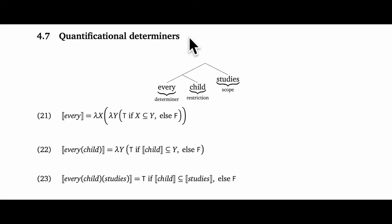Let's begin getting used to these determiners. Have this simple syntactic structure in mind: the sentence every child studies. The determiner every forms a constituent with the restriction child, so the meaning of every combines first with the meaning of child.